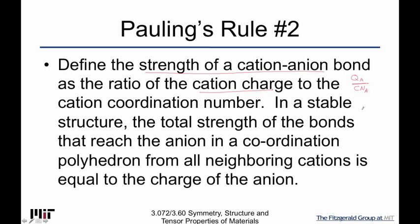So it's the strength of a bond. Now, in a stable structure, the total strength of the bonds that reach the anion in a coordination polyhedron from all neighboring cations is equal to the charge of the anion. So let's draw a picture. Here's an anion, and the total strength, this guy has, let's say, three bonds coming to it. So I have to say, each one of these is this much. So three QA over CNA has to equal the charge on B.